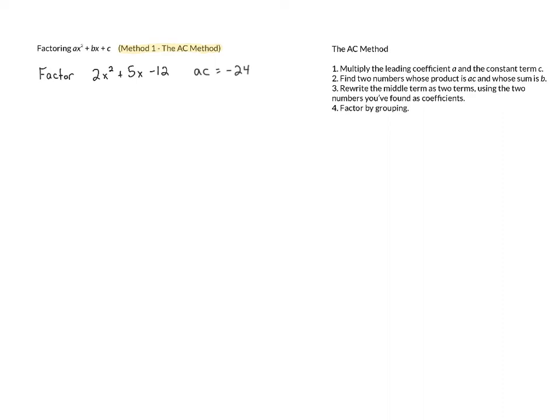Once we've done that, we want to find two numbers whose product is AC and whose sum is B. So we want to find two numbers whose product is negative 24 and whose sum is B, which in this case is 5.